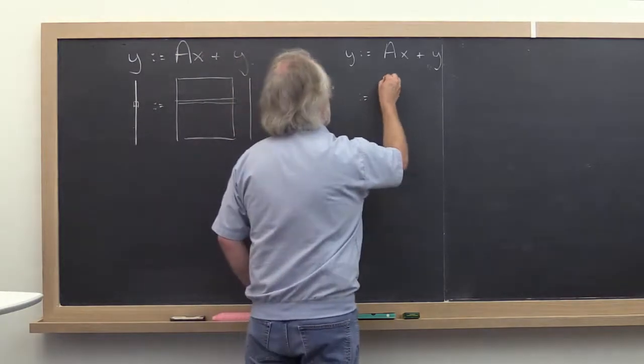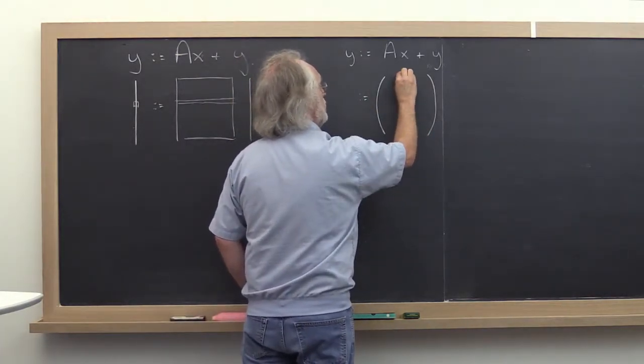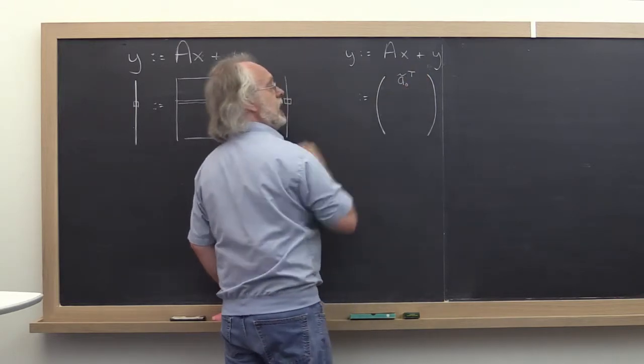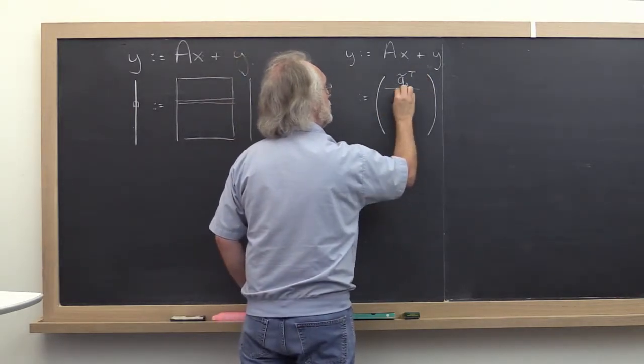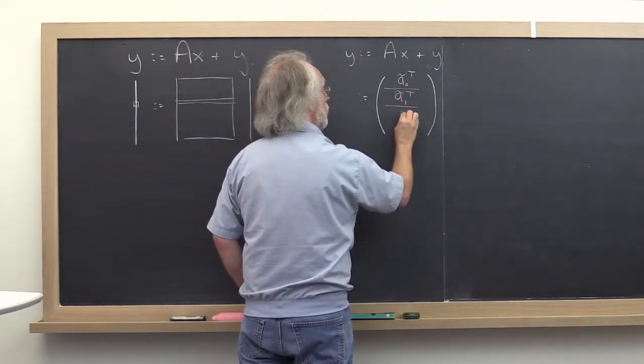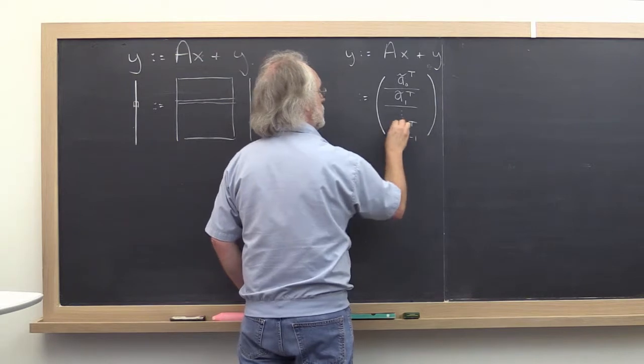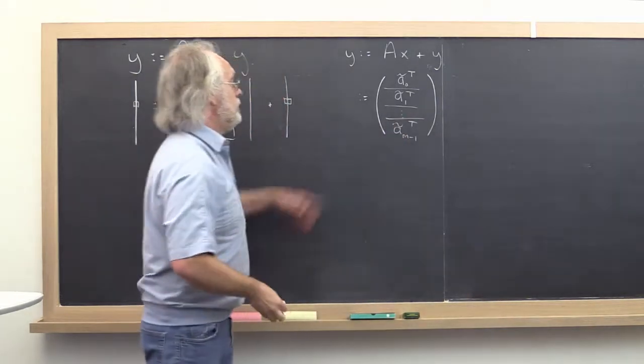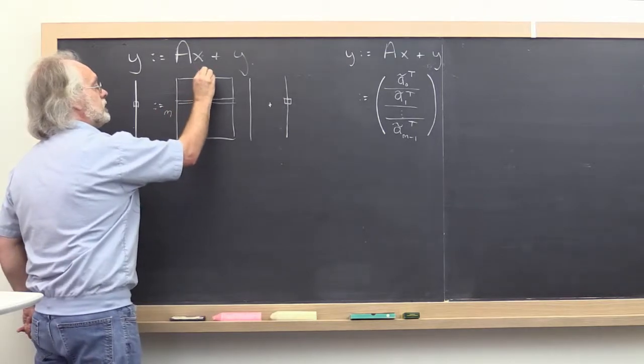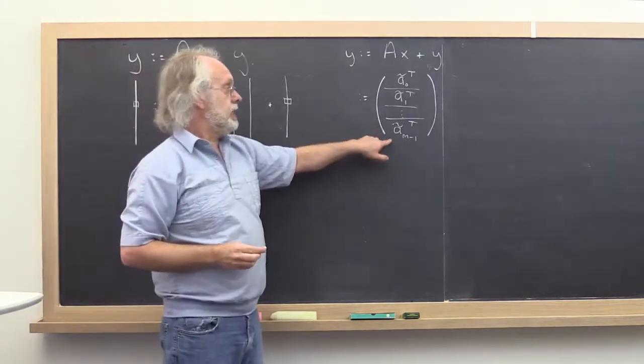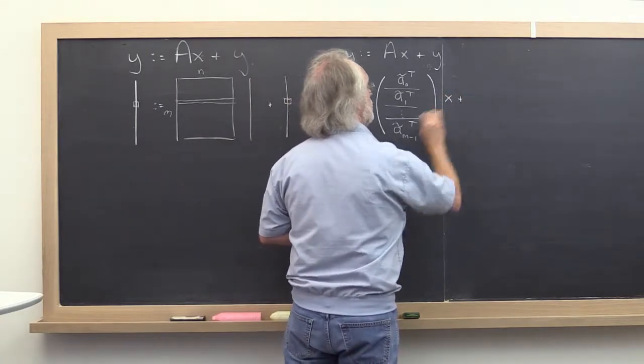So let's take our matrix A and expose the rows: A0 tilde transpose - remember that's how we denoted a row of A - A1 tilde transpose, where we're assuming that matrix A is an M by N matrix. And then we can say multiply that times X and add the result to Y.